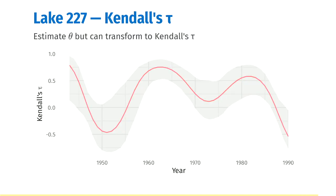And then this is our estimate of theta, but it's been transformed into Kendall's tau, a more general measure of dependence. We can see that although it has varied a lot over time, in the recent period we were most interested in, we see a switch from positive correlation to negative correlation after 1980.